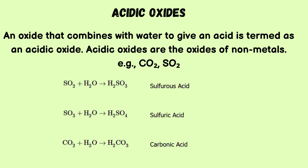Acidic oxides: an oxide that combines with water to give an acid is termed an acidic oxide. These are the oxides of non-metals. Examples include carbon dioxide and sulfur dioxide, which react with water to give their respective acids.